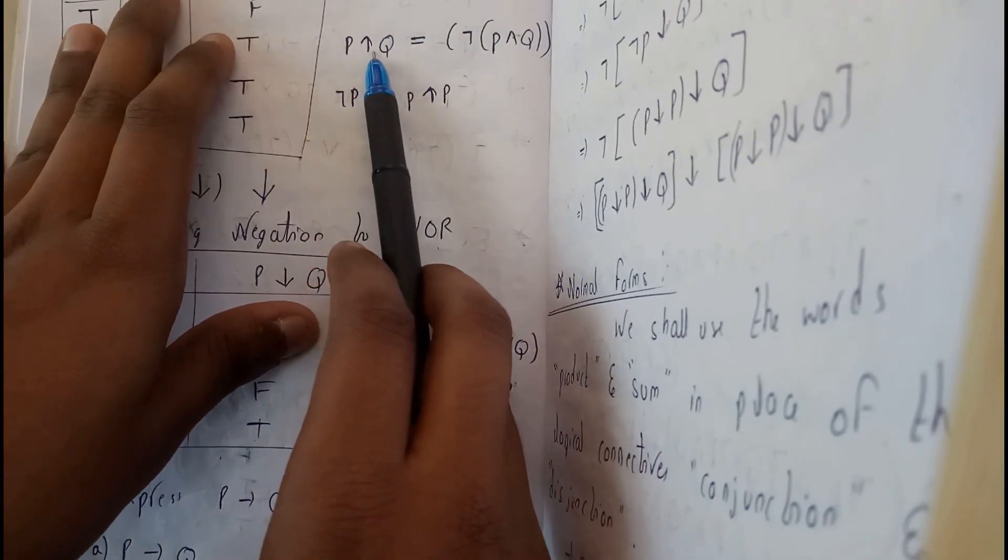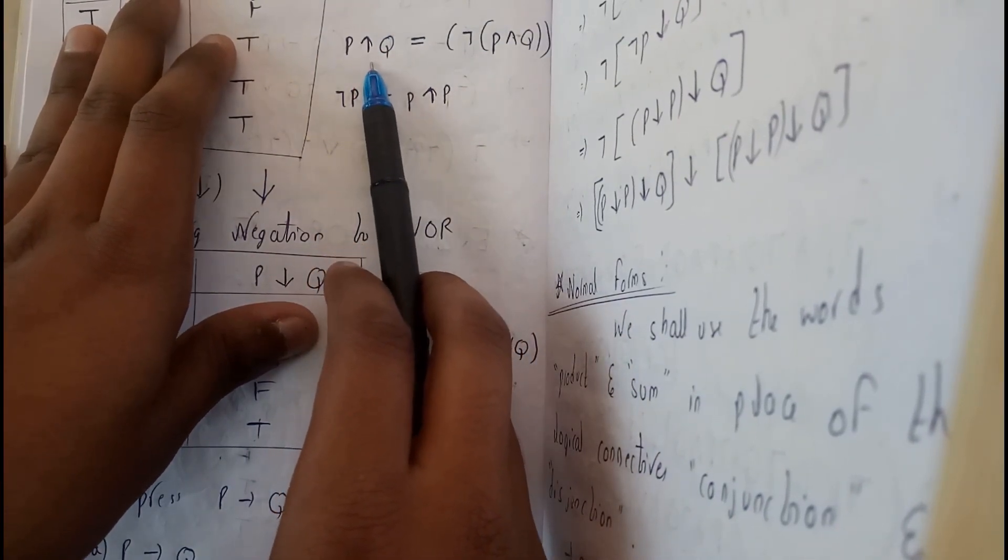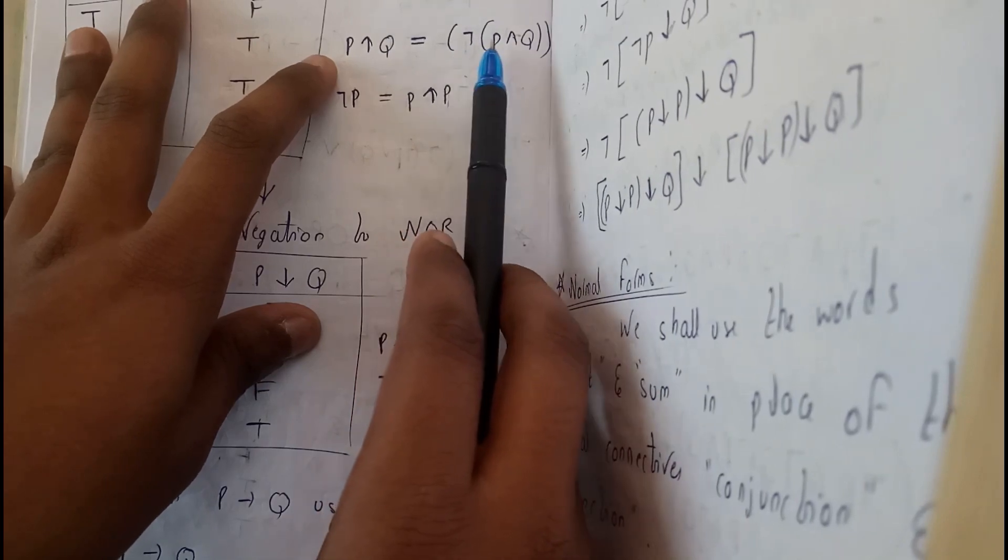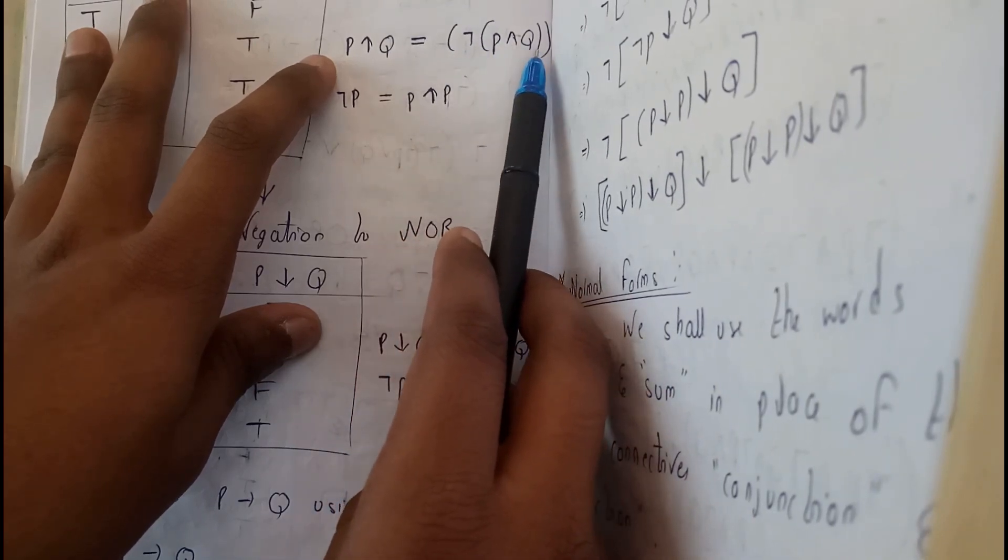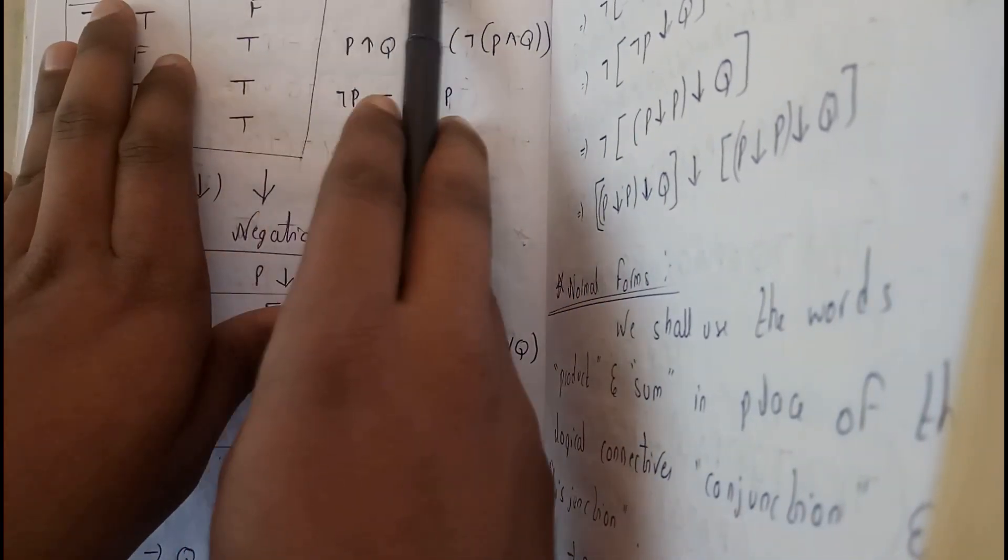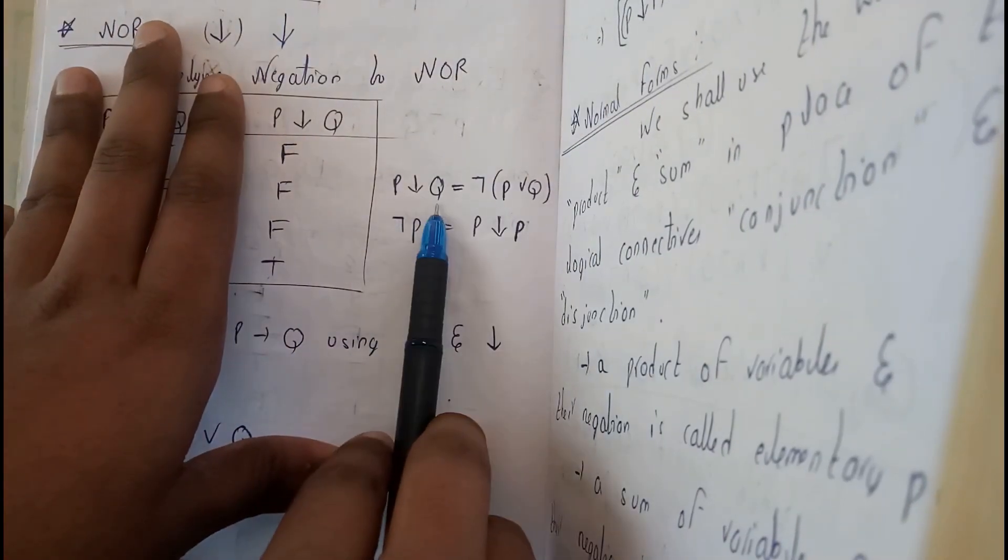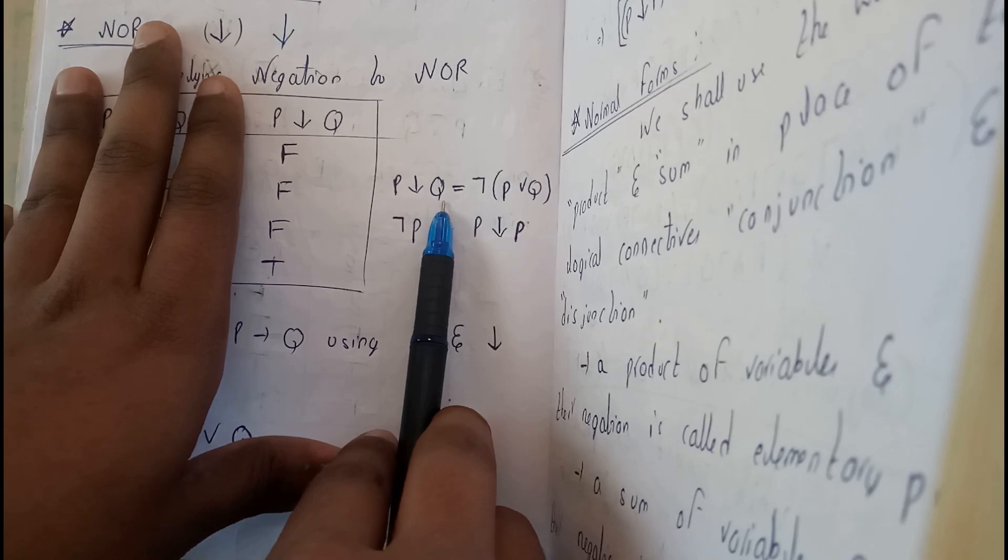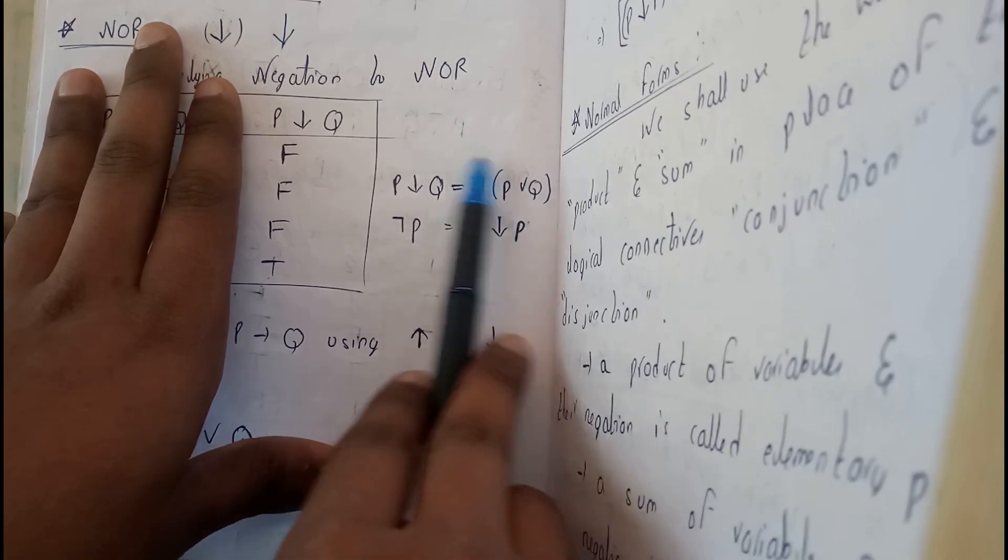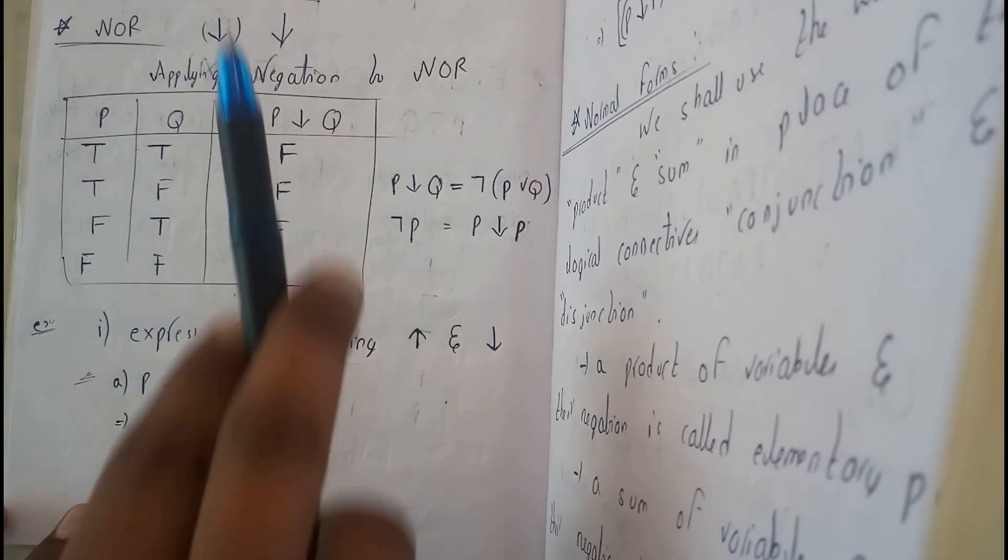P upper arrow, which means NAND, P NAND Q is equal to negation of P AND Q. I hope this is what I have told here, right? P NOR Q is equal to negation of P OR Q. This is what I have just told you, right?